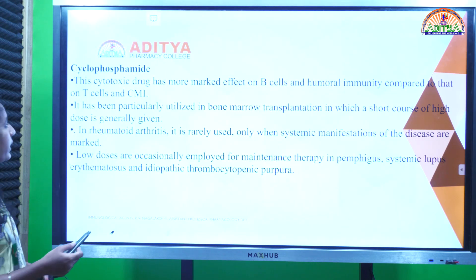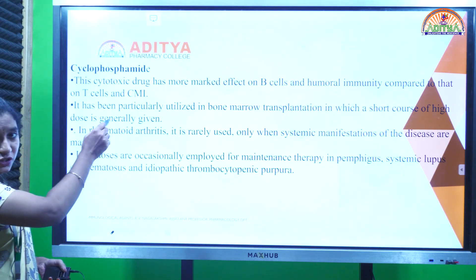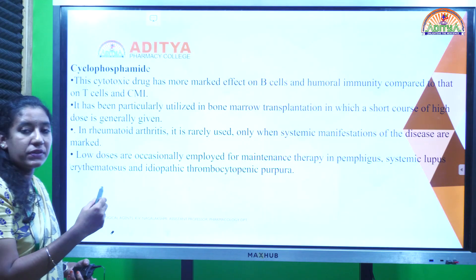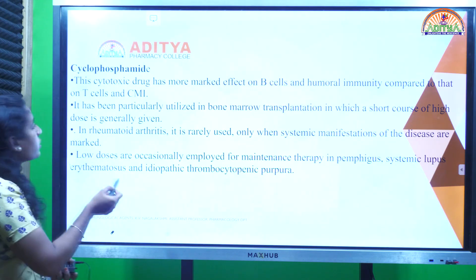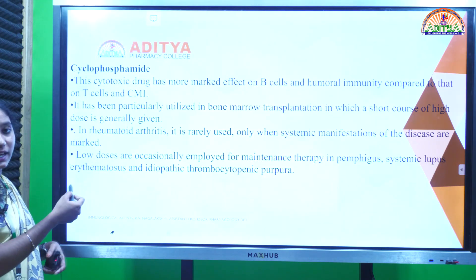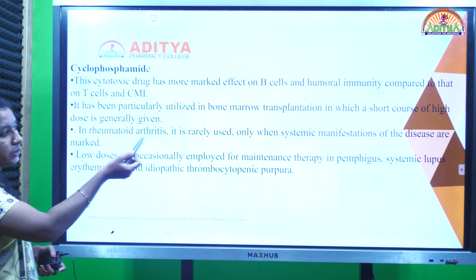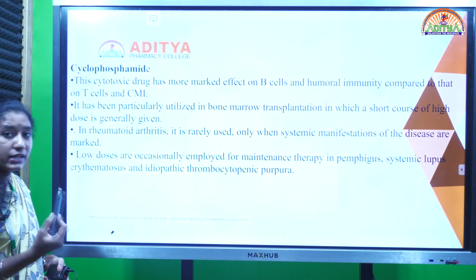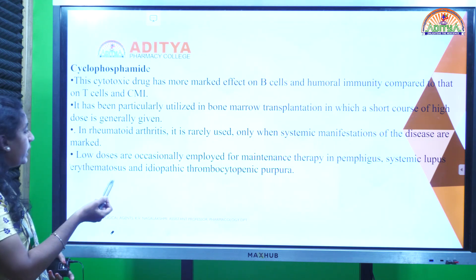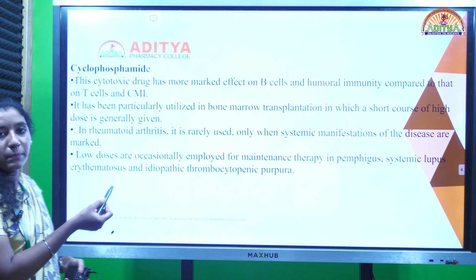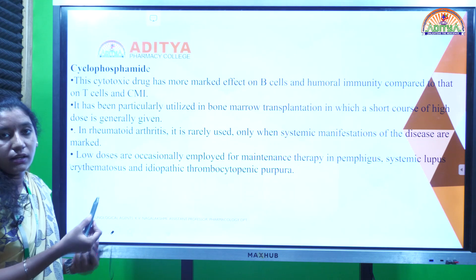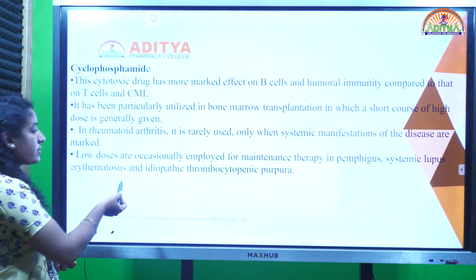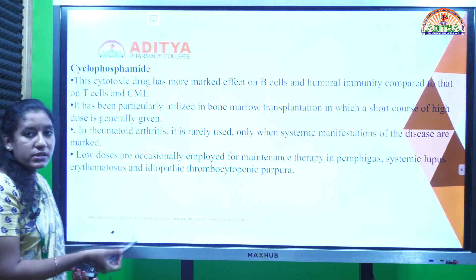Next is cyclophosphamide, which has more marked actions on B cells compared to T cells. It is mostly used in bone marrow transplantation, and in low doses can be employed in rheumatoid arthritis, pemphigus, systemic lupus erythematosus, and thrombocytopenic purpura.